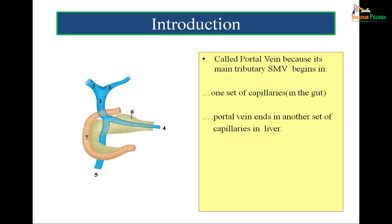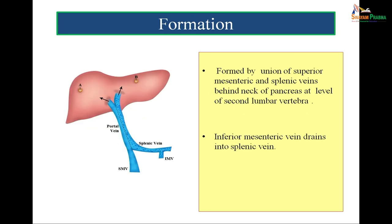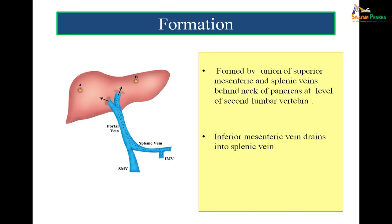In this figure, 5 is the superior mesenteric vein, 4 is the splenic vein, 6 is the pancreas, and 7 is the C-shaped loop of duodenum. You can see that the portal vein is lying behind the first part of the duodenum and then it is dividing into right and left branches. The left branch is longer and narrower, marked by 3 in the figure, while the right branch is marked by 2. The inferior mesenteric vein is draining into the splenic vein, and these branches enter the porta hepatis of the liver.